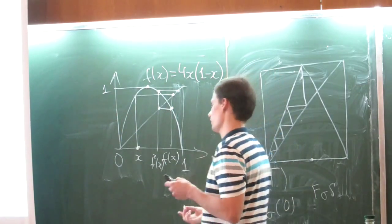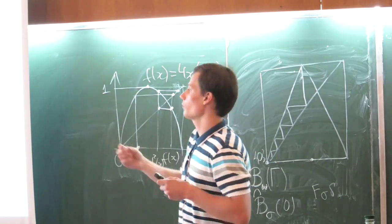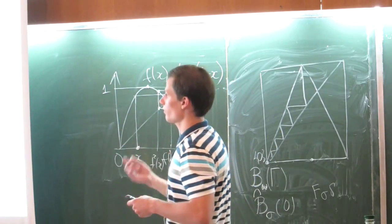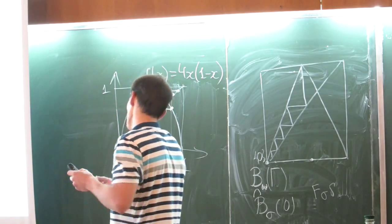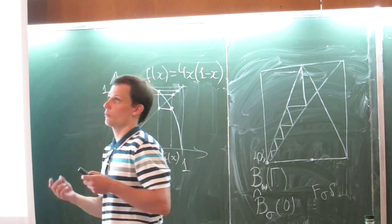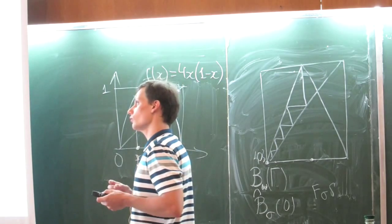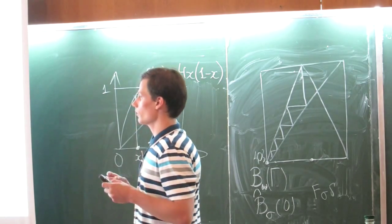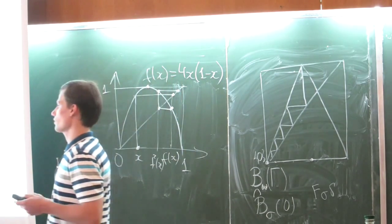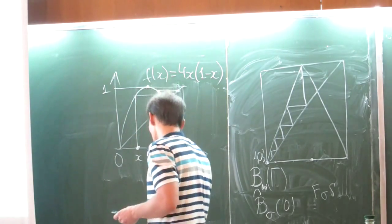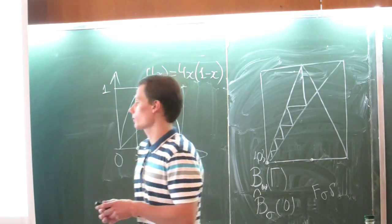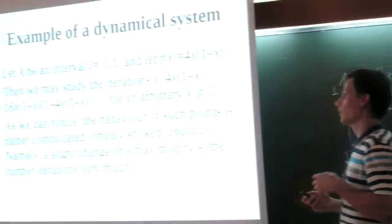If we try to simulate the behavior of such iterations, for example, with the help of a computer, we may notice that it is very complicated, often called chaotic. This is a well-known phenomenon called sensitivity.